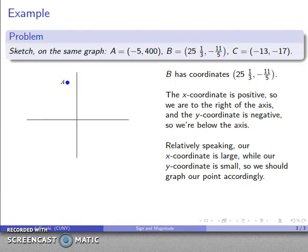And again, relatively speaking, our x-coordinate is large, our y-coordinate is small. This is 25 and change, this is negative 11/5, around 2, so the x-coordinate is much larger than the y-coordinate. So I'm going to be over a fair distance, but down just a small distance. So I should graph our point accordingly, and maybe I'll be located there someplace.